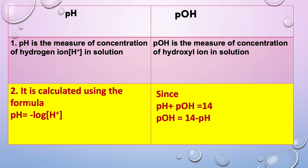pH is calculated using the formula: pH = −log[H⁺]. Since pH + pOH = 14, we can get pOH by 14 − pH.